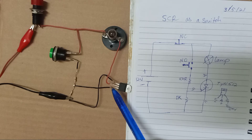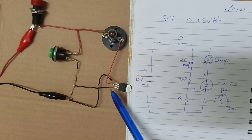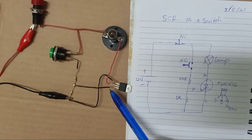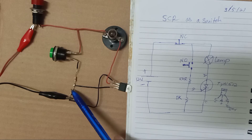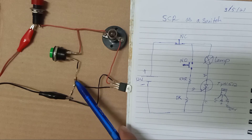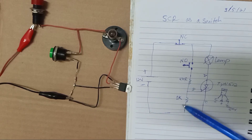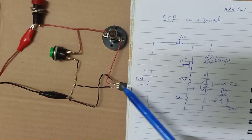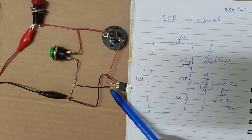According to the datasheet of this SCR, the gate requires only a very small current — like 15 milliamps to 30 milliamps. So we must use resistors on both sides. From the positive side we use the 470 ohm resistor, and from the negative side we put the 1 kilo ohm resistor. Then the gate connects to the gate pin of the SCR.